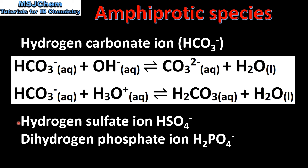Here are two more examples of amphiprotic species: the hydrogen sulfate ion, HSO₄⁻, and the dihydrogen phosphate ion, H₂PO₄⁻. Both these examples can be found on the worksheet accompanying this video.